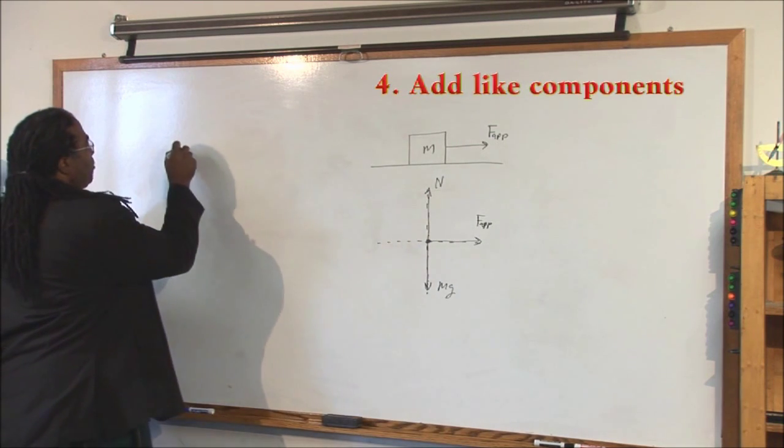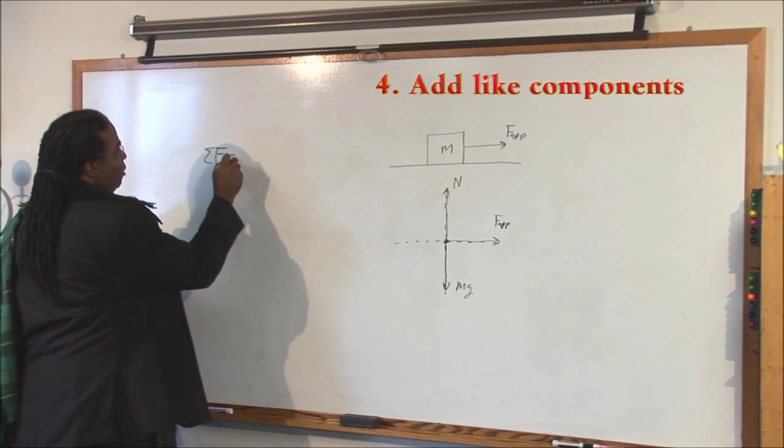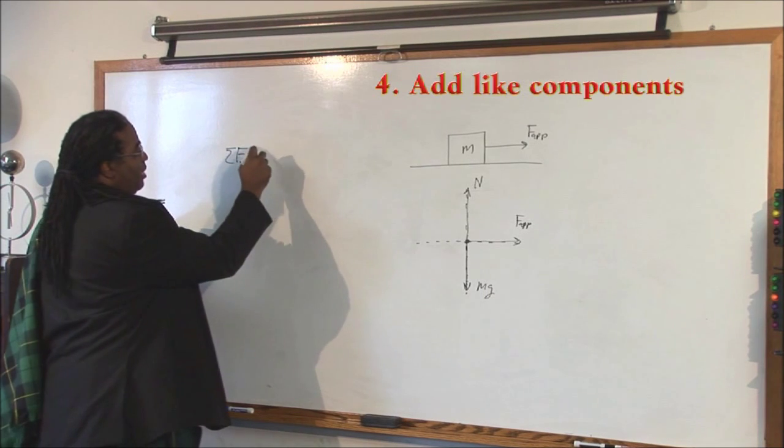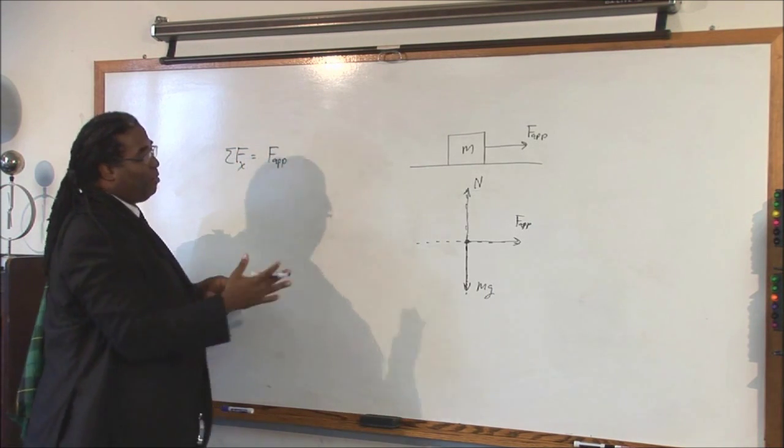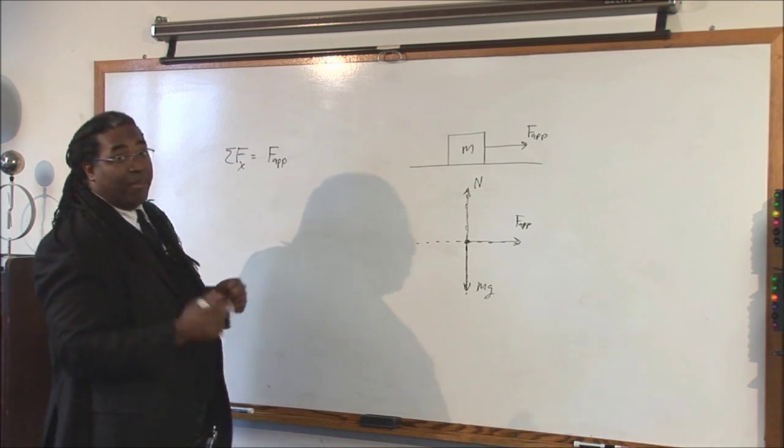So, step four, add like components. So, the sum of the forces is equal to, or sum of forces in the x, rather, F applied. Are there any more arrows on the x-axis? No. Then that equals ma.